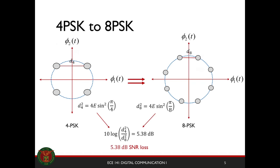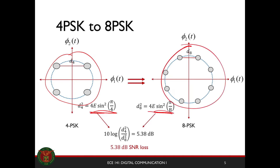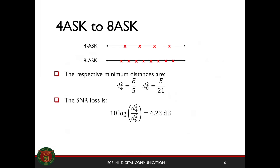If you use a 4PSK constellation, the minimum distance between symbols is this value. For an 8PSK, it's this value, and the ratio — the power difference between them, dependent on the minimum distance — is 5.38 dB. By using an 8PSK constellation instead of a 4PSK, you incur a 5.38 dB SNR loss. What about for 4ASK to 8ASK? Around 6.28 dB loss. The coding gain must overcome this for you to not lose anything at all.